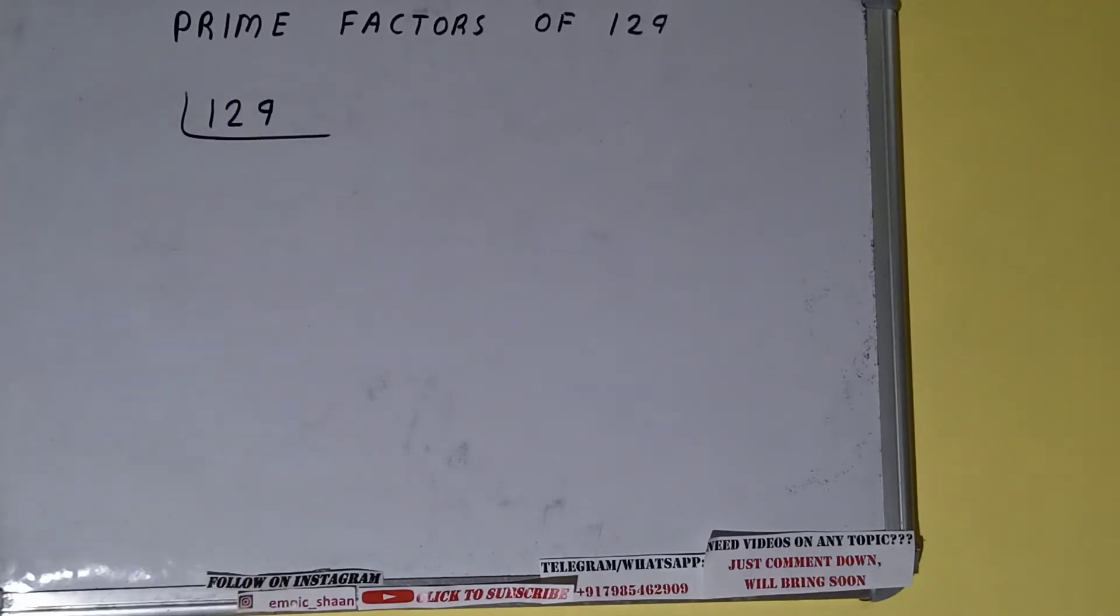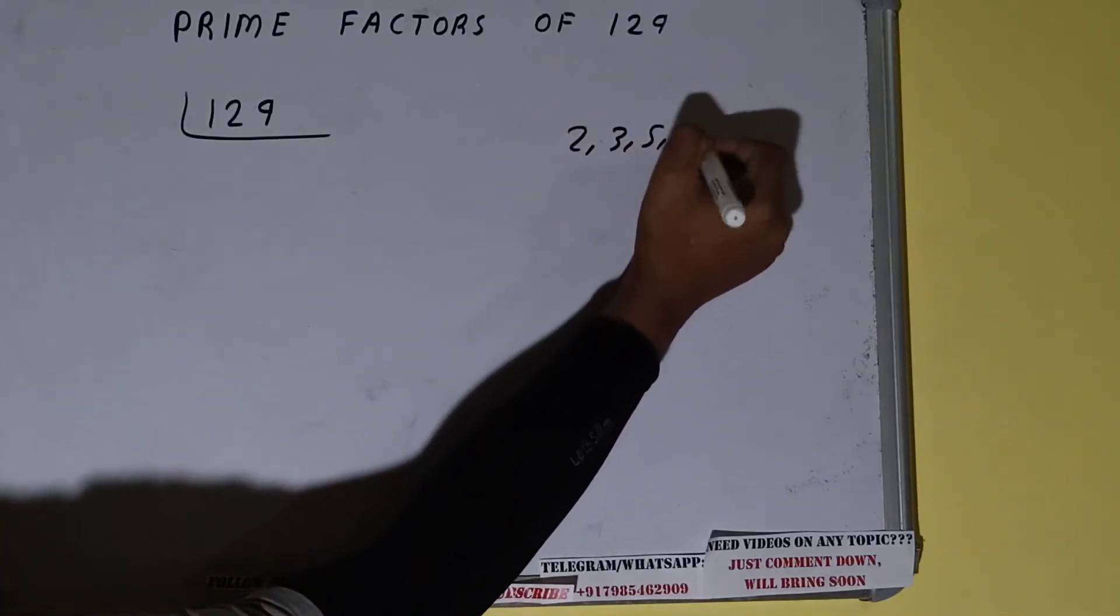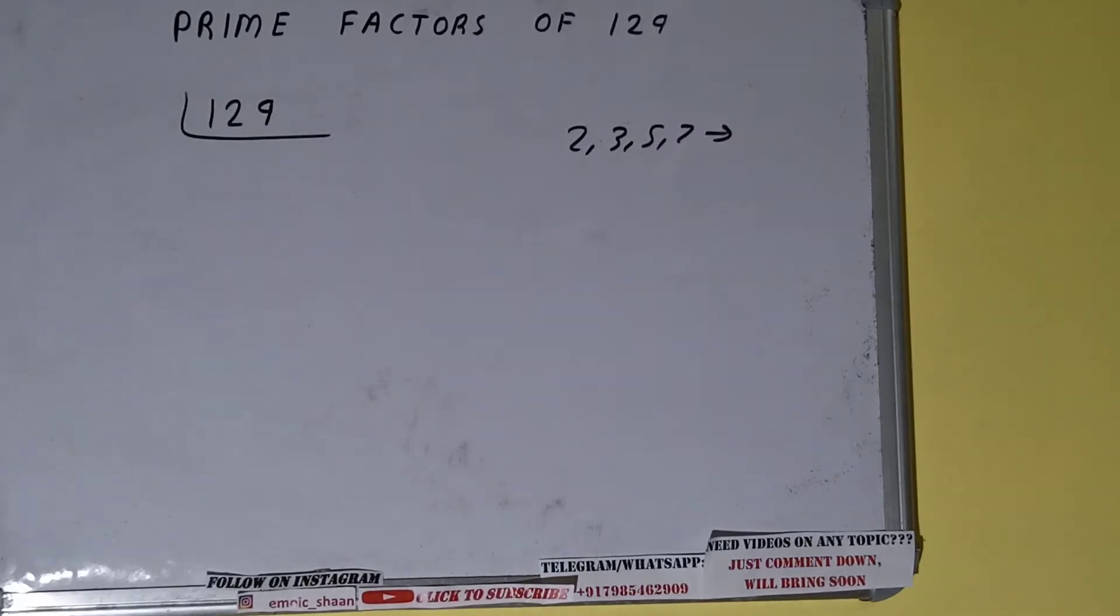The next thing we need to know about is what are prime numbers. So prime numbers are numbers that are divisible by one and the number itself, like 2, 3, 5, 7, and so on.